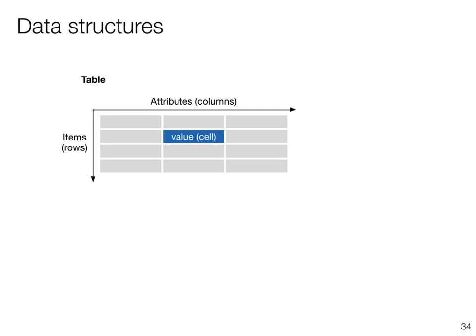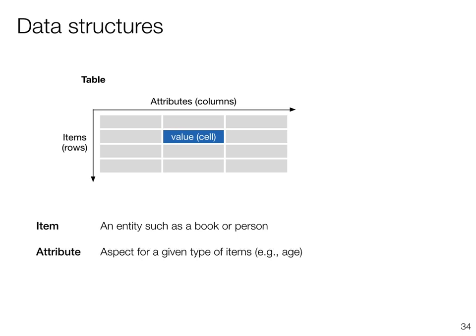Data can come in all kinds of structures. The most common structure we face is probably a tabular or table structure in which the rows are the items — such as a person or a book — and the attributes are a given aspect or characteristic of the items, such as age or name. In this table, a particular cell is the specific characterization of an attribute for an item — for example, the age of someone could be 32.